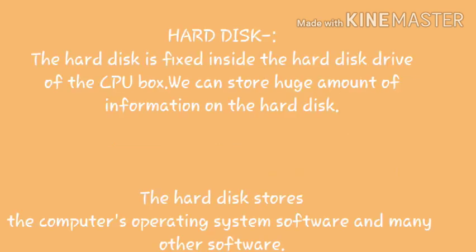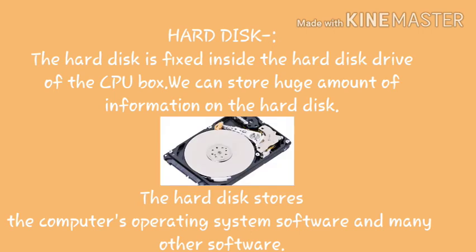First, we will discuss the hard disk. The hard disk is fixed inside the hard disk drive of the CPU box, and we can store a huge amount of information on it. The hard disk is a metallic disk coated with magnetic material. It stores the computer operating system software and many other software.